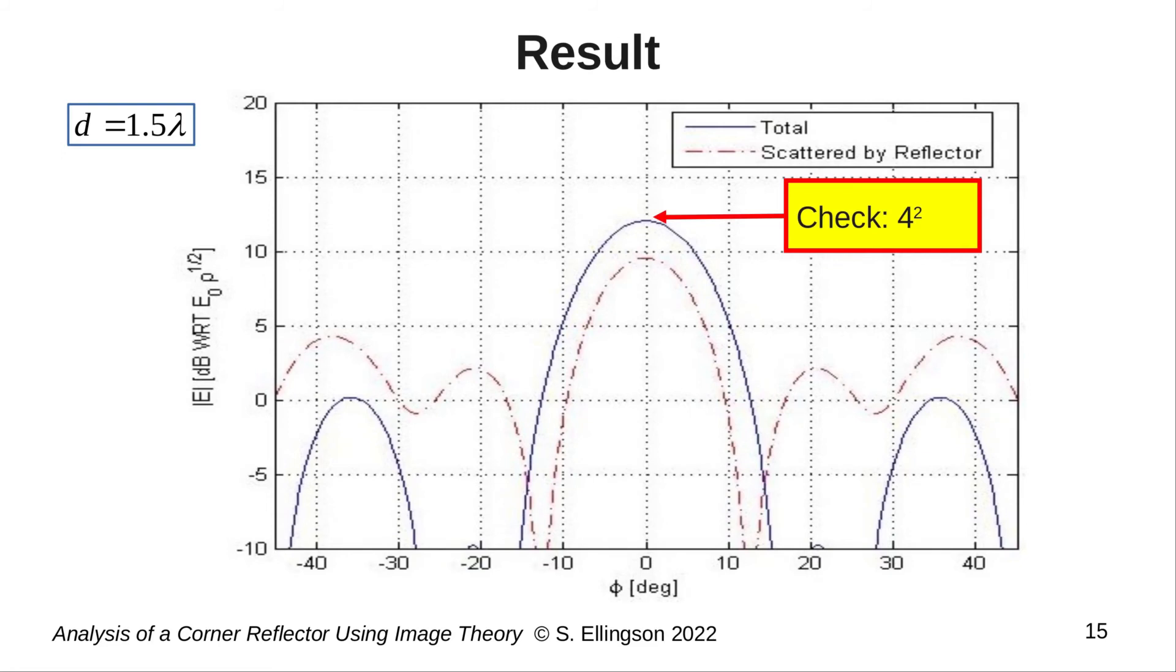We also have a chance to sanity check our result. The check goes like this. For the normalization that I've made here, the magnitude of the radiation from the feed is simply 1. Thus, the maximum array factor for the four line sources together is simply 4 times 1, that is 4. The line sources are omnidirectional, so the array factor squared, in this case, gives us the power pattern, and so the maximum value of the power pattern here should be 4 squared, which is 16, which in turn is about 12 dB in linear units. And, of course, this is what we see in the plot as well.